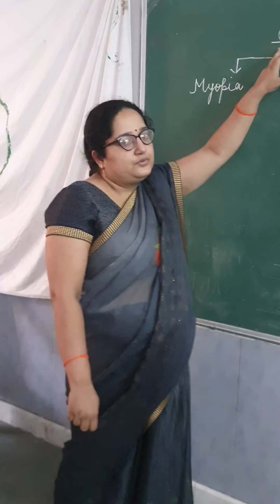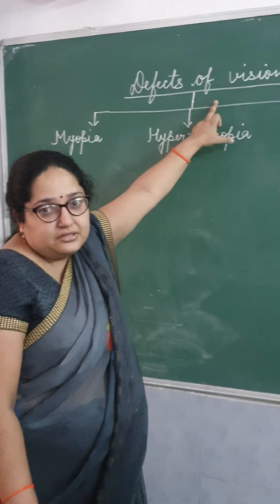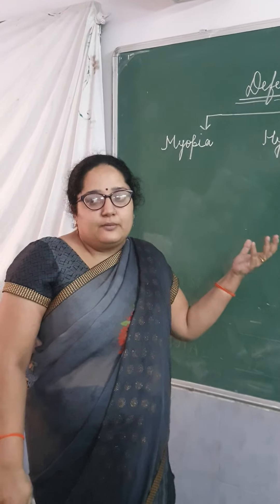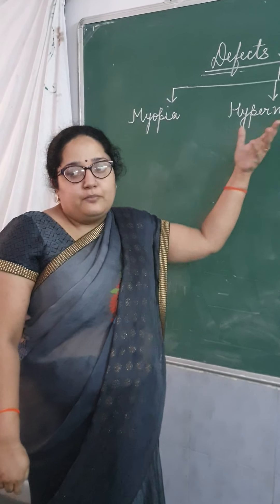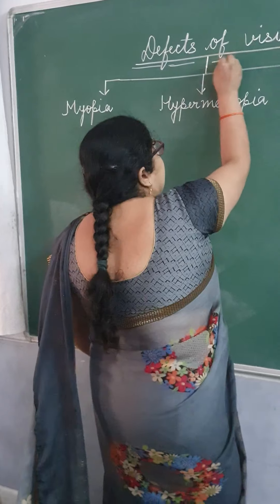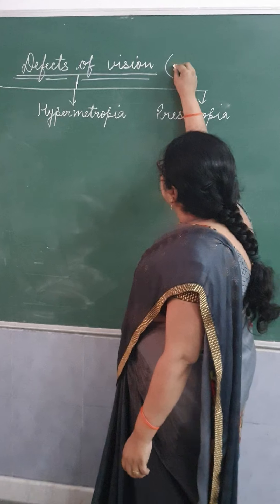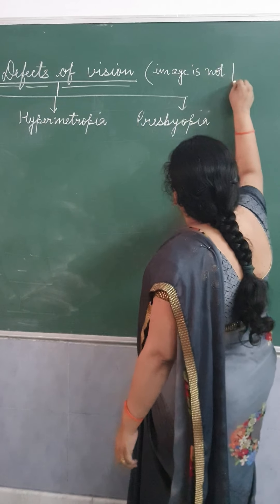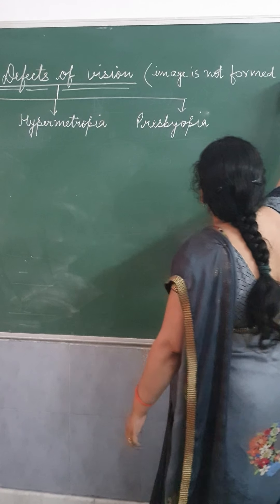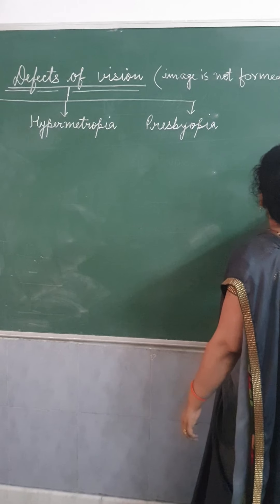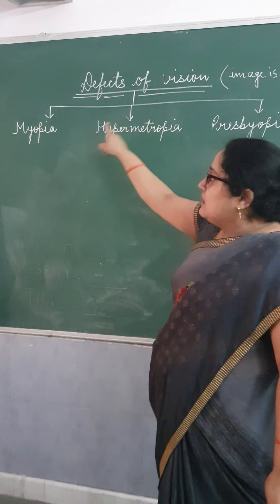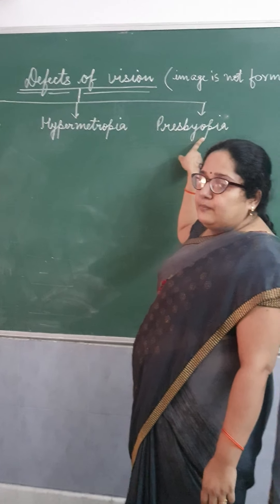Today we are going to start the new topic: defects of vision. A defect of vision occurs when a person cannot see either nearby objects or far objects clearly, or both. This defect occurs when the image is not forming on the retina. There are three types of defects: myopia, hypermetropia, and presbyopia.